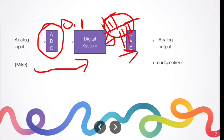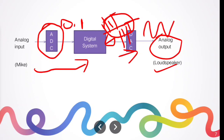That is why we can receive an analog output at the receiver side. Here, the loudspeaker is the receiver. After converting the signal back into analog using the DAC, the same voice signal can be received at the output side.